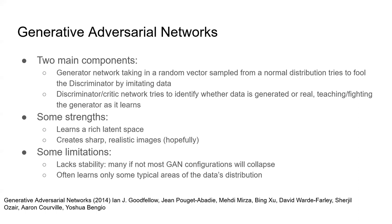The discriminator slash critic network tries to identify whether the data input into it is real from a dataset or generated from the generator — it learns to discriminate between real and fake generated samples. It's called adversarial because the discriminator's whole point is to figure out if the GAN is trying to fool it. In doing so, it teaches the GAN how to better fool it — you back-propagate through the discriminator into the generator and adjust the weights until both are good at their respective tasks.